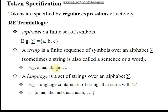A language is a set of strings formed over the alphabet sigma. For example, a language L defined as the set of strings that start with 'a' — every string must start with 'a' to belong to L. Strings like 'a', 'ab', 'abac', or 'acb' all start with 'a' and can include any symbols from the alphabet.